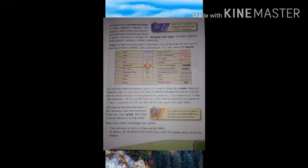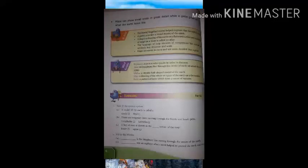Maps have certain advantages over globes. Both globe and map show our earth's physical features, but both have certain advantages and disadvantages. Maps are easy to carry as they can be folded. All places can be seen at the same time, unlike the globe which has to be rotated. Maps can show small areas in great detail while a globe gives an idea of what the earth looks like.